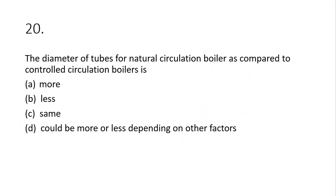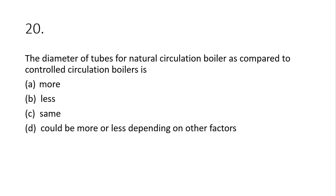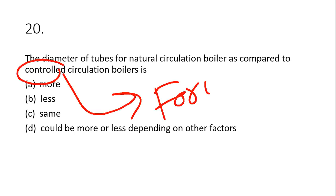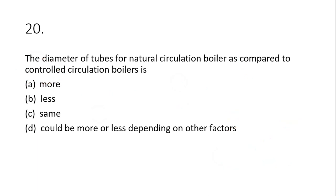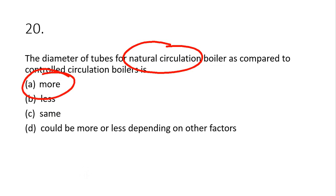Question 20: the diameter of tubes in a natural circulation boiler compared to a forced circulation boiler — here 'controlled' refers to forced circulation using a pump. With an external agent (pump), smaller pipe size is needed; but for natural circulation, larger pipe diameter is required. The answer is 'more' — option E is the correct answer.